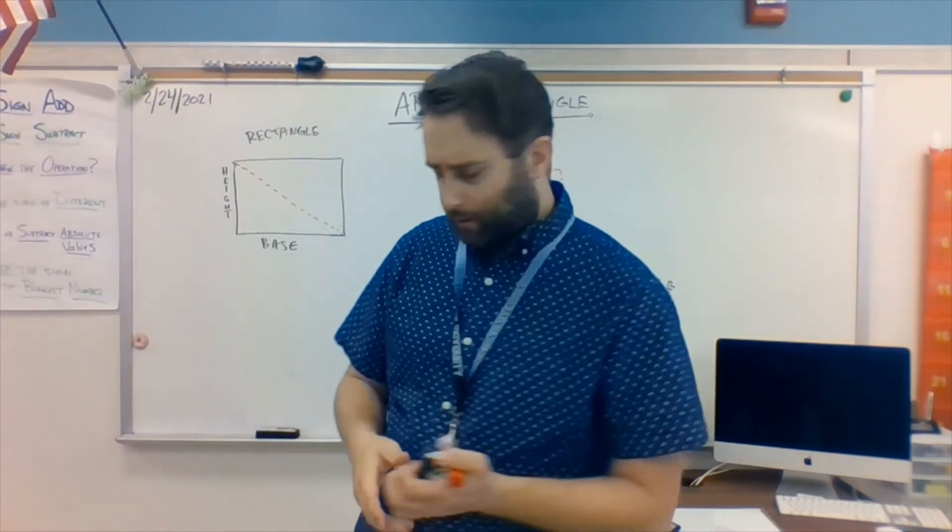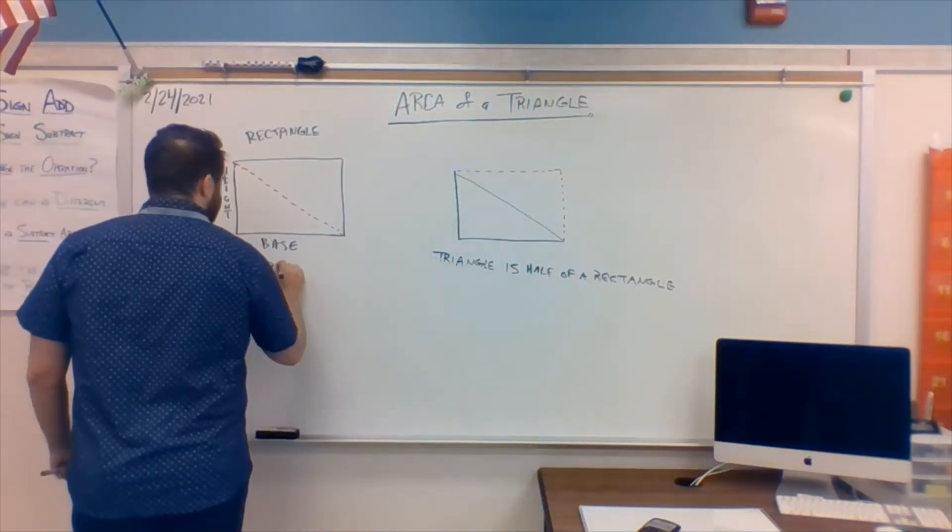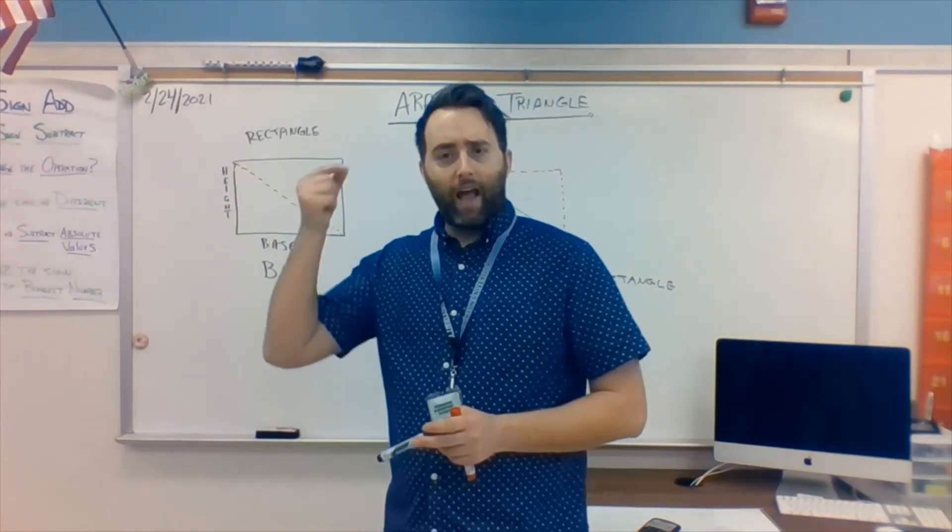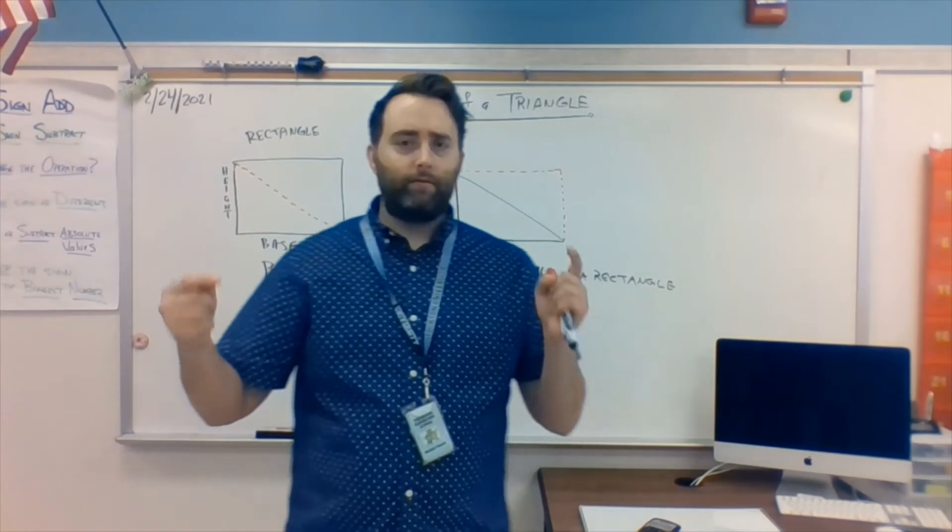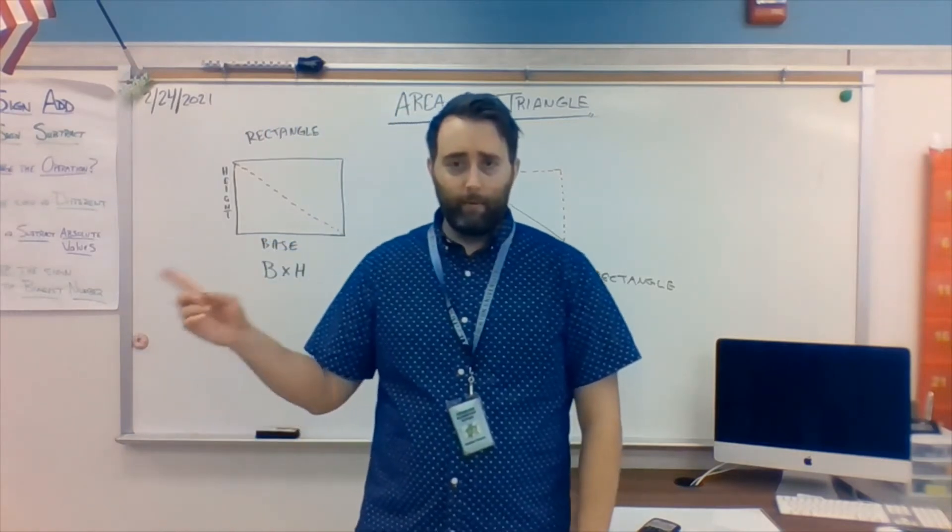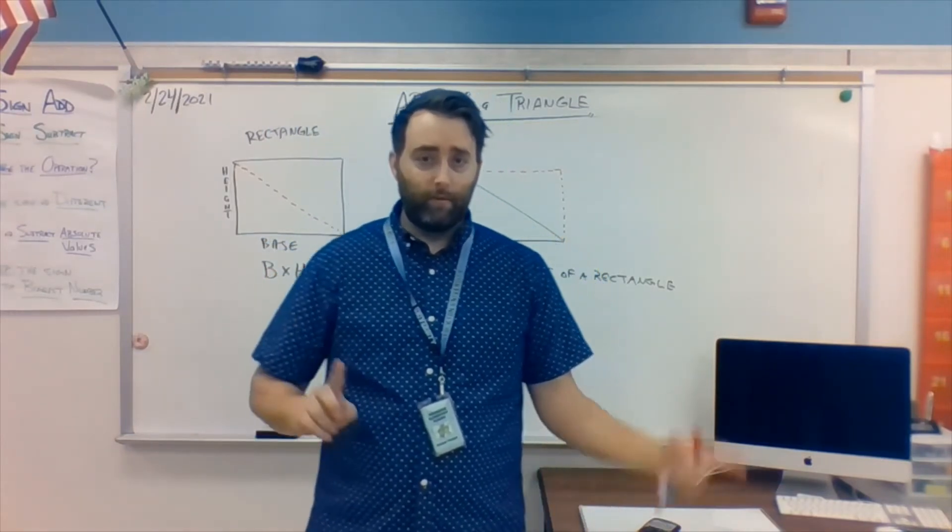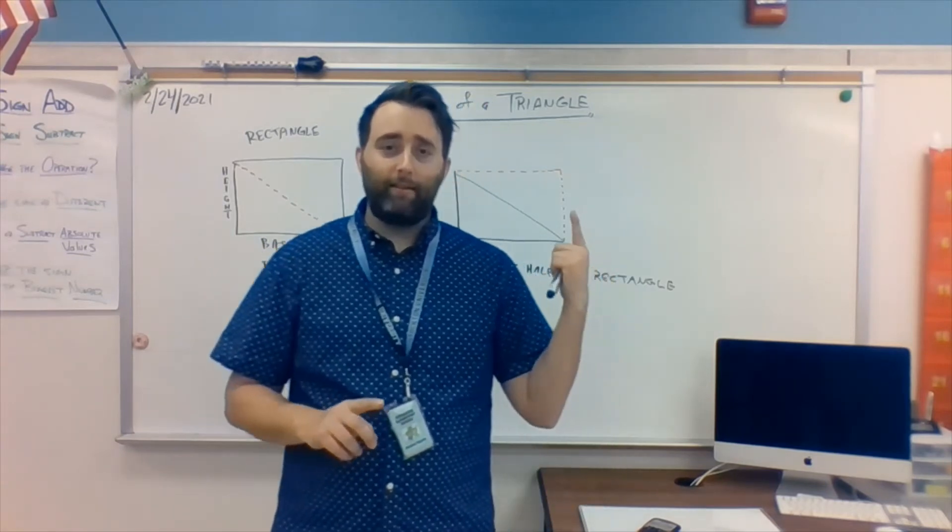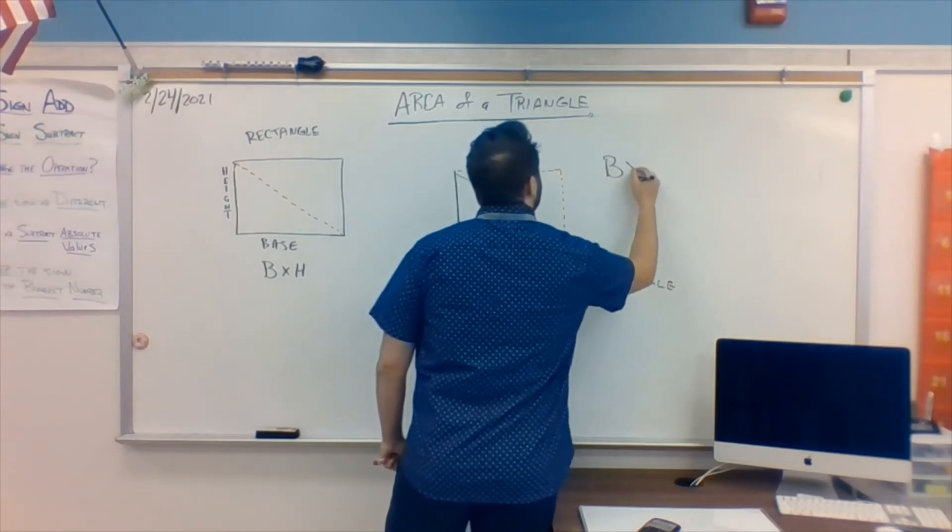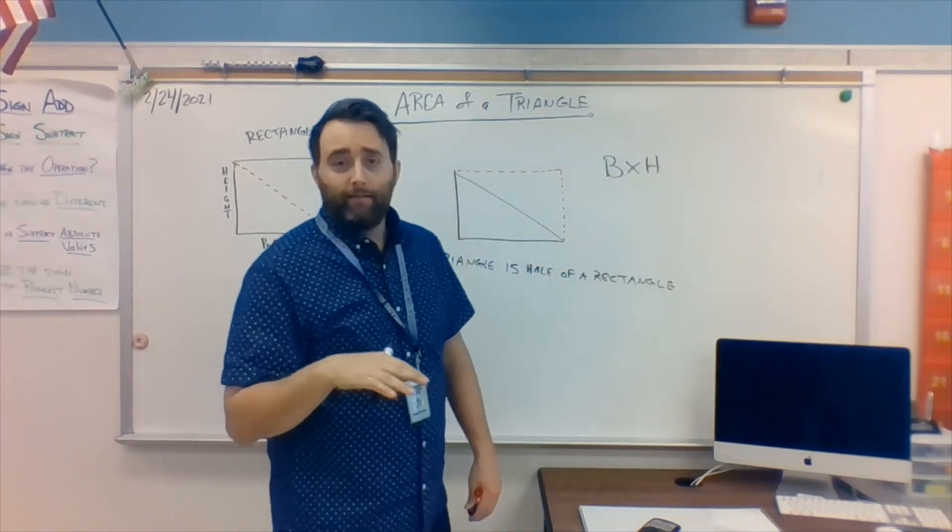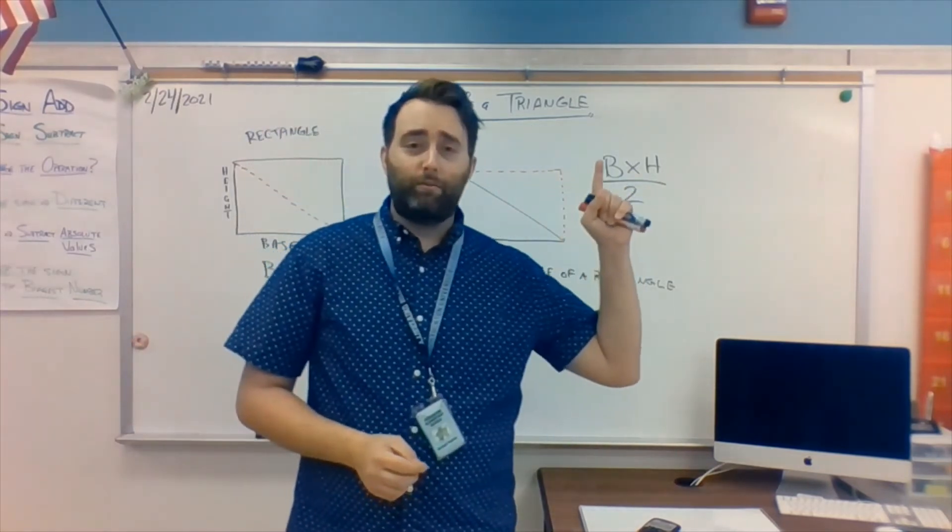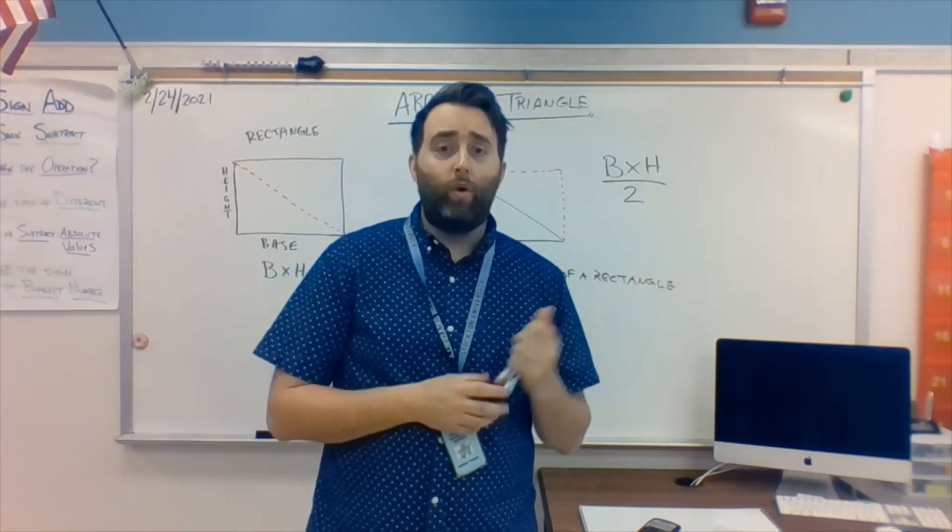Well, what's the formula for a rectangle? Base times height. I fold it in half to get a triangle. Well, what do you think the area of a triangle is going to be? Base times height, fold it in half. Base times height, divide it in half. So it is base times height divided in half, divided by two. That's what it means when you divide something in half. You simply put a two underneath it.